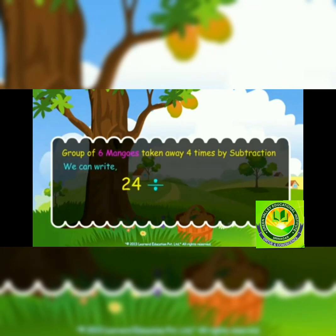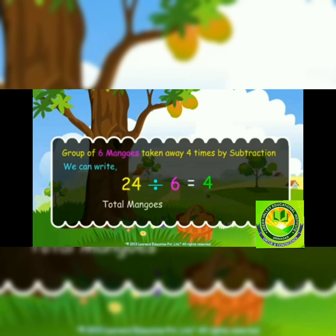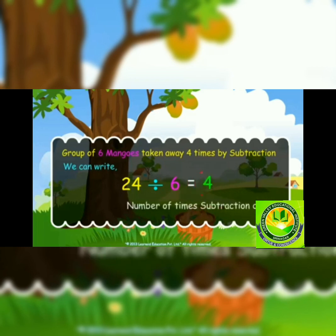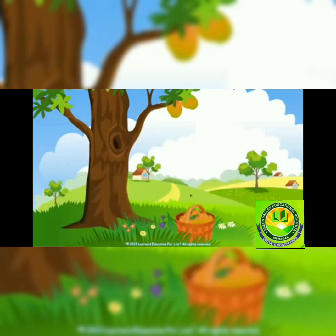We can also write it as 24 divided by 6 is equal to 4. Here 24 is the total number of mangoes, six is the mangoes in one group, and four is the number of times we did subtraction. I hope you have understood the concept of division by repeated subtraction. Stay blessed, thank you.